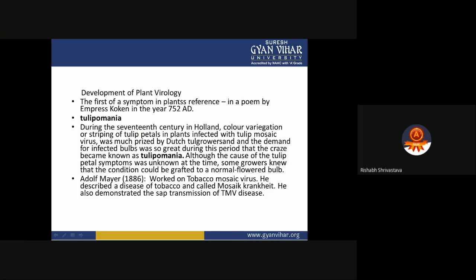It was a poem by Empress Koken about tulips. During the 17th century in Holland, the color variegation or striping of tulip petals in plants infected with tulip mosaic virus was much praised by Dutch growers. The demand for infected bulbs was so great during that period that the trade became known as tulip mania. Although the cause of the tulip mosaic symptoms was unknown at the time, some growers knew the condition could be grafted to a normal flowering plant.